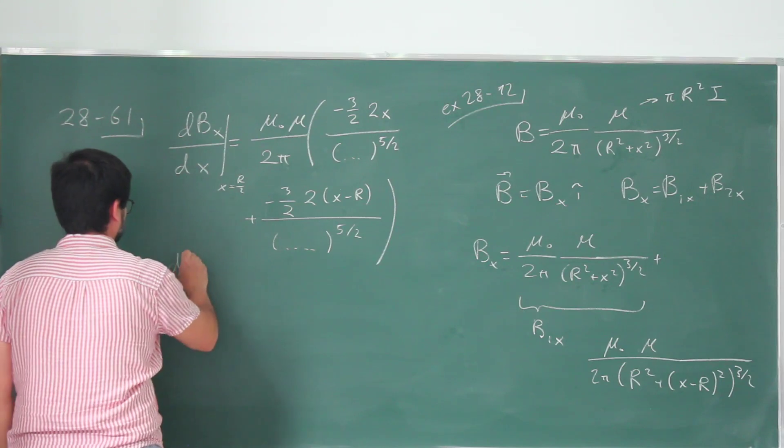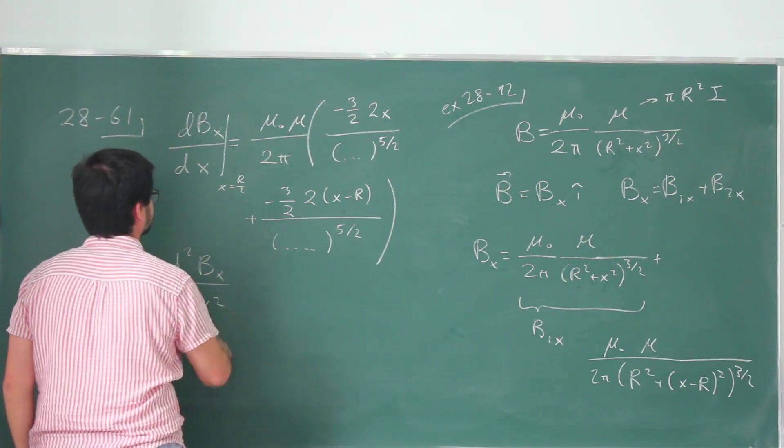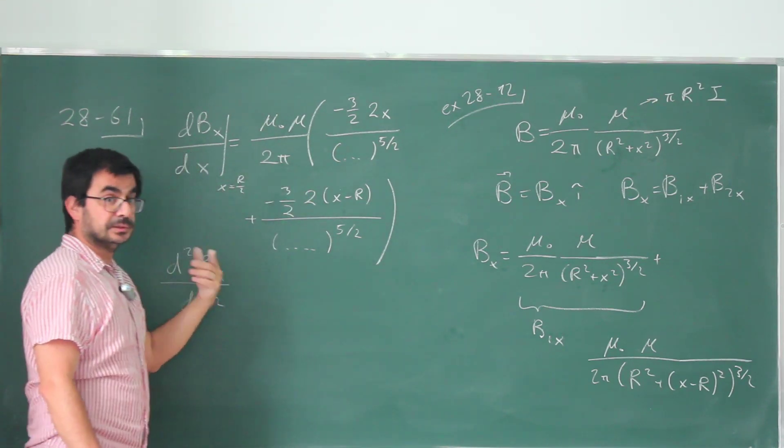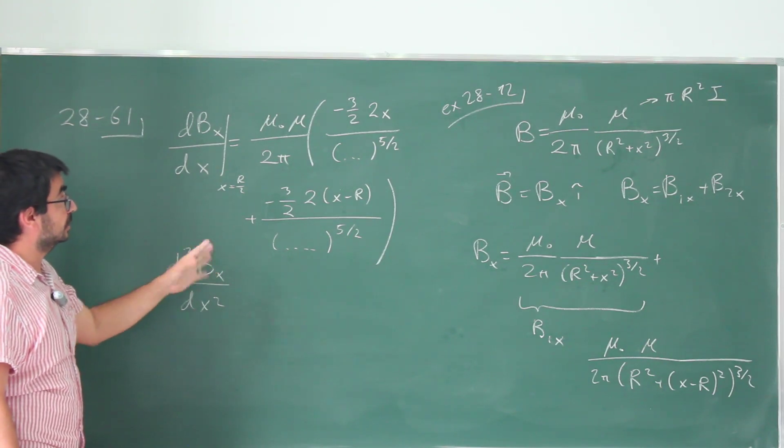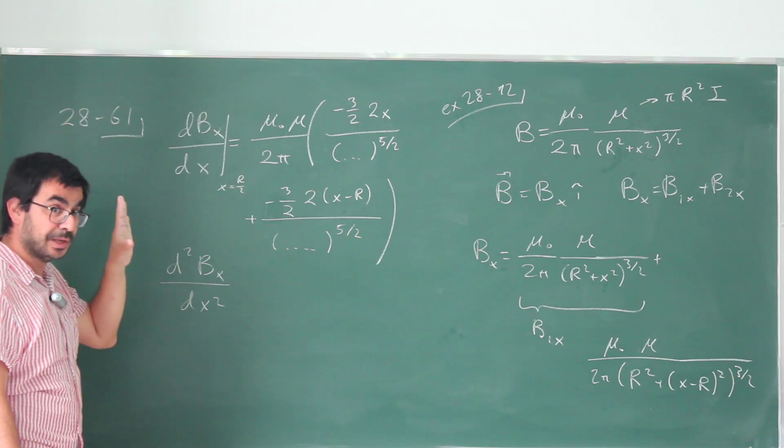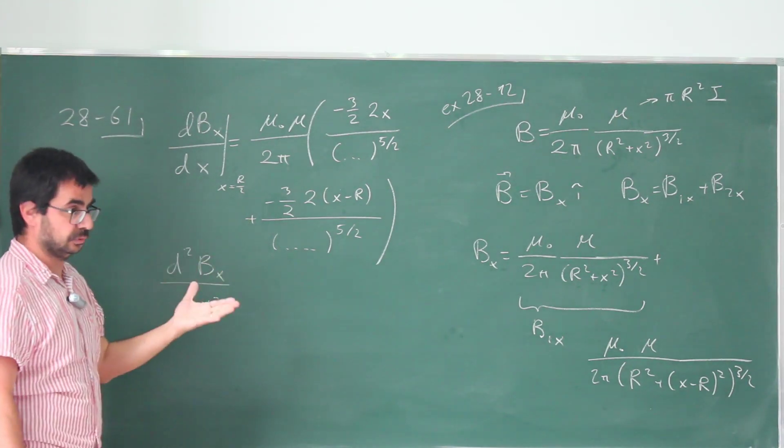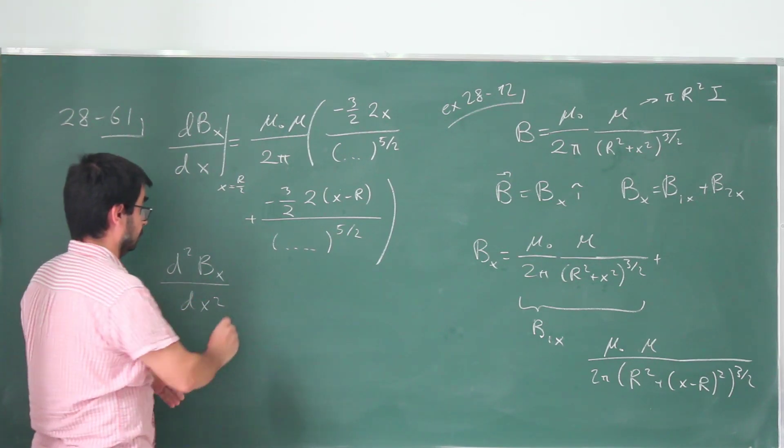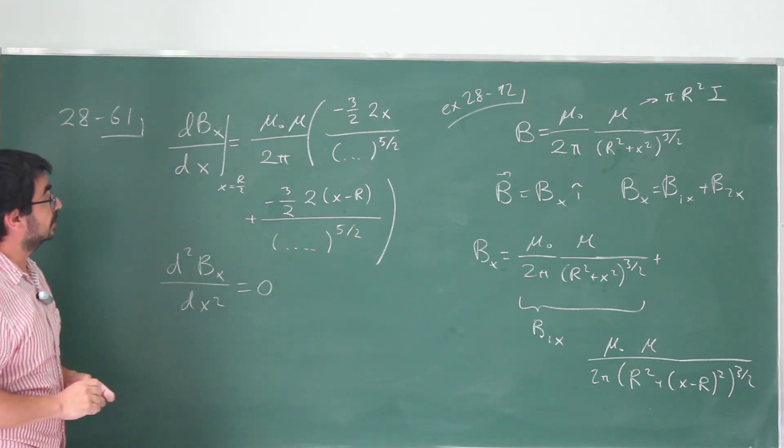Now what about d square Bx by dx square, the second derivative. Now we have to take this and take the derivative again. And there is no cancellation that you can just show very easily. You actually have to evaluate, you have to substitute R over 2. And it just looks like magic when you do this evaluation. But everything cancels out, and you get 0 indeed.